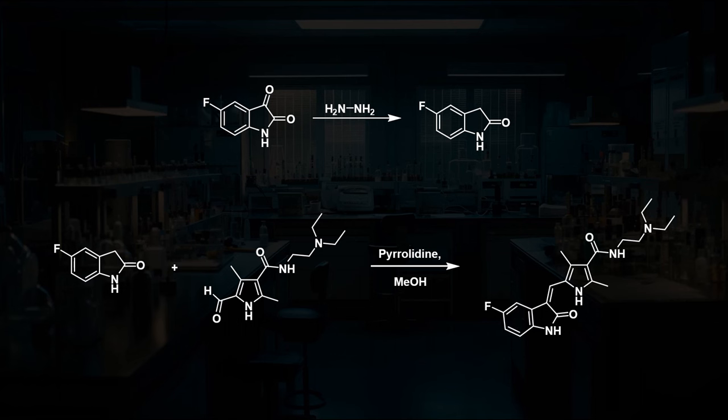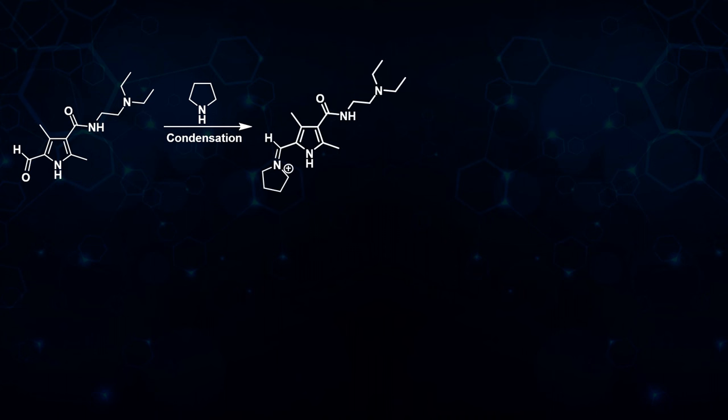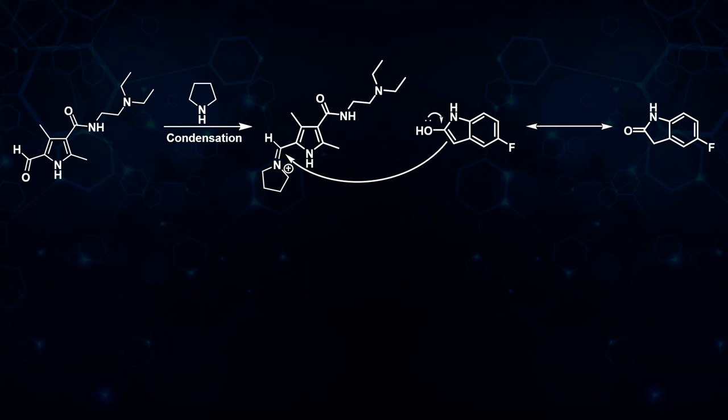Pyrrolidine catalyzes this reaction by reacting with the aldehyde group to form an iminium ion, which is more reactive towards nucleophilic attack by the enol form of the second fragment. The pyrrolidine is then regenerated for an E1CB type elimination, which forms the final product.